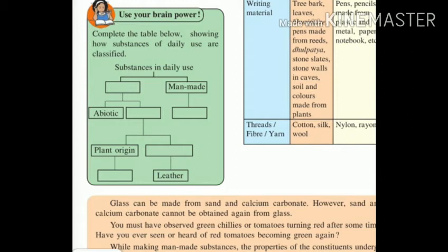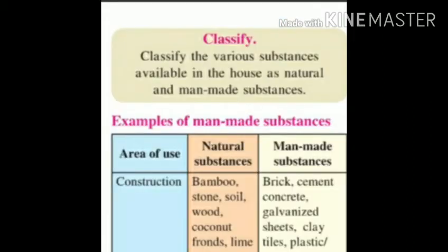Now let's classify substances as natural and man-made. Natural substances are classified as abiotic and biotic. Examples of biotic: plant origin — cotton; animal origin — leather. This is how the classification table is solved.